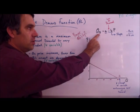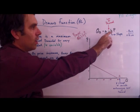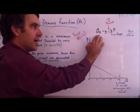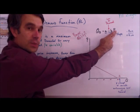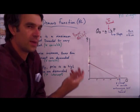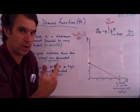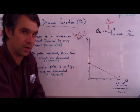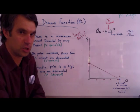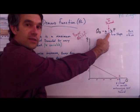The demand function is QD equals a minus bP. What we're saying is that quantity demanded has some relationship to price. We said before that the law of demand means that when price goes up, quantity demanded goes down and vice versa. So they have an inverse, or negative, relationship. That negative relationship is why we have a minus sign right there.